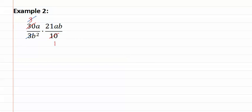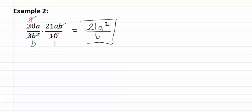Now let's look at the variables. I see that there are two a's and a b on top, and b squared — essentially two b's — on the bottom. If there is one b on the top and two b's on the bottom, I can reduce the one b and the two b's with one b left over on the bottom. I then multiply all of my remaining numerator pieces together, which is a, twenty-one, and a, giving me twenty-one a squared. In the denominator, all I have left is a b and a one. Remember, one b is the same thing as b. This gives us our answer.